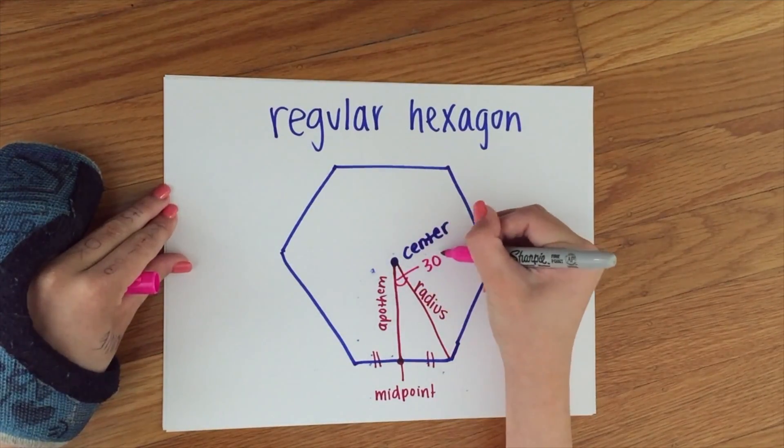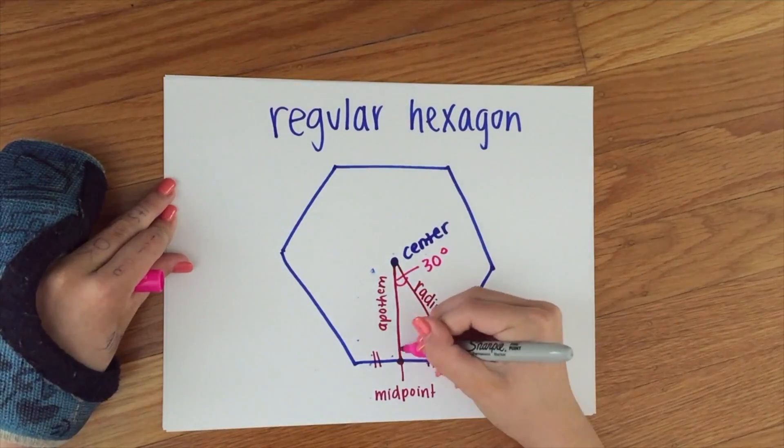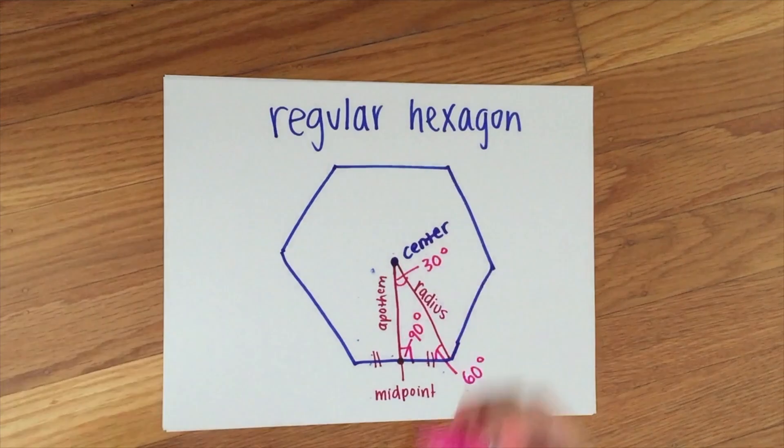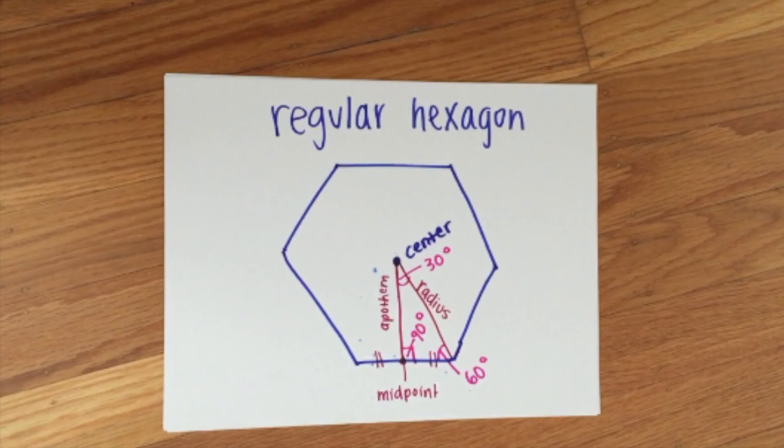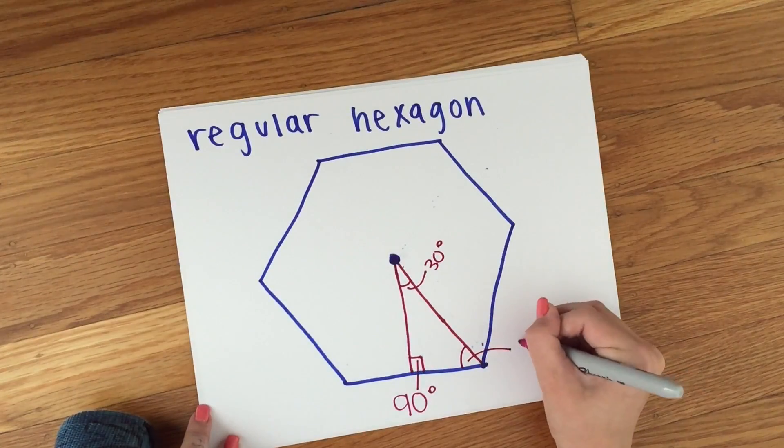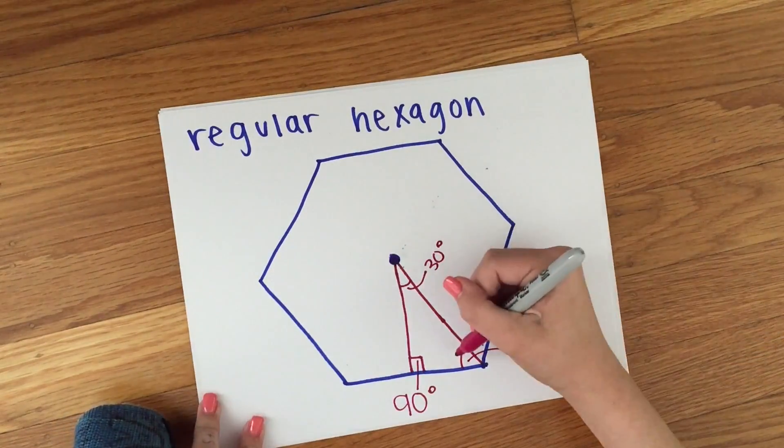The angle across from the bisected hexagon side is 30 degrees. The side across from the apothem is 60 degrees, and the side across from the radius is 90 degrees. Within this hexagon, we have a 30-60-90 triangle.